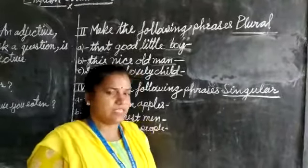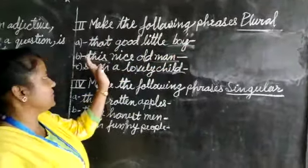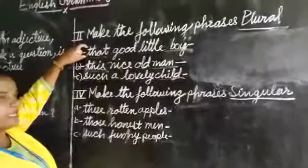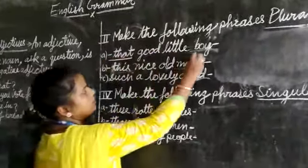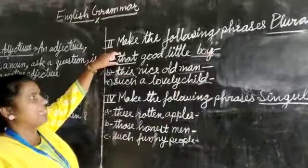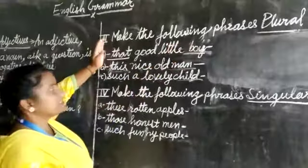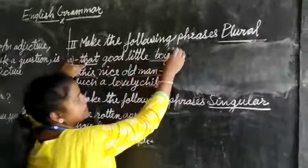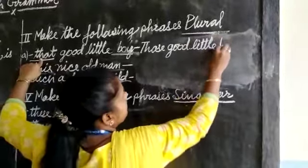Now dear children, we will see the exercises. Make the following phrases plural. These phrases are in singular form and we will write them in plural. For example: 'That good little boy.' Here, that is singular and boy is singular. So the plural of that is those, and the plural of boy is boys. Our answer is: those good little boys.